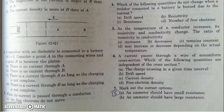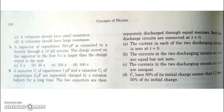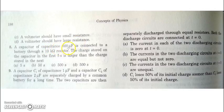In the next question about correct statements: an ammeter should have small resistance — obviously correct. An ammeter should have large resistance — wrong. A voltmeter should have small resistance — wrong. A voltmeter should have large resistance — obviously correct.